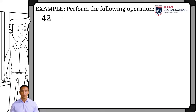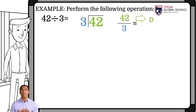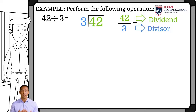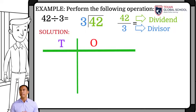We will perform the division of 42 by 3 in this first example. Remember that this expression can be represented in different ways to identify the dividend and divisor. In this case, we have two digits in the dividend, so we will make a table indicating 1s and 10s.